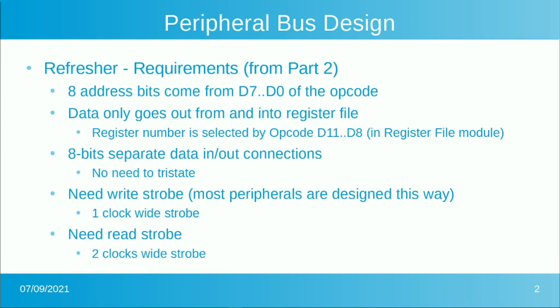As a refresher, our basic design from part two in the architecture was that there are only eight address bits, allowing for up to 256 I/O devices. Those address bits come directly from D7 down to D0 of the instruction itself, so they're easy to find and generate — directly picked off the CPU instruction. The data only goes in and out of the register file, so writes come out of the register file and reads go into it. That register number is also easily selected by the D11 down to D8 bits of the instruction.